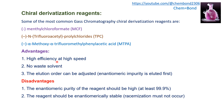Advantages of chiral derivatization are that it is highly efficient and fast, no waste of solvent occurs, and the elution order can be adjusted — if there are impurities in enantiomeric form, they elute first. Disadvantages are that the enantiomeric purity of the reagent must be high; if purity is low, a diastereomeric mixture will not form properly. The reagent must also be enantiomerically stable with no racemization.